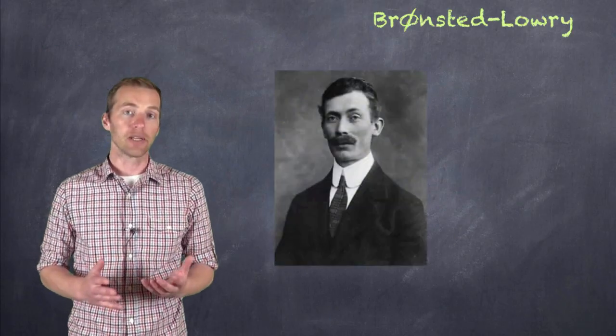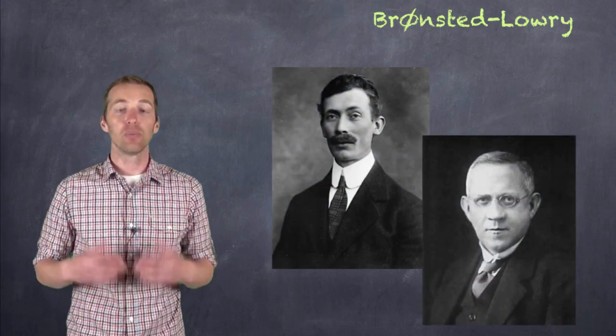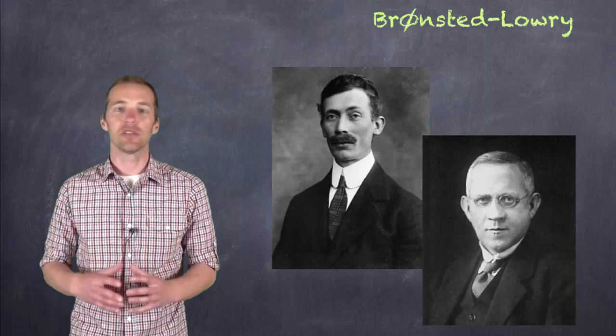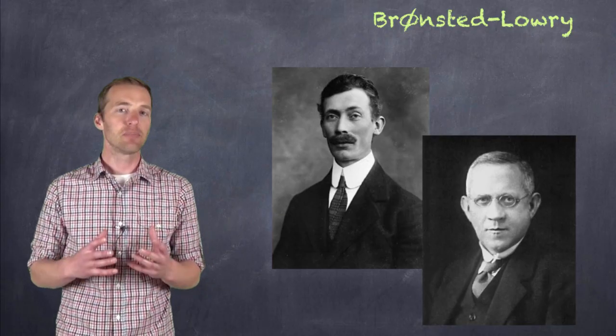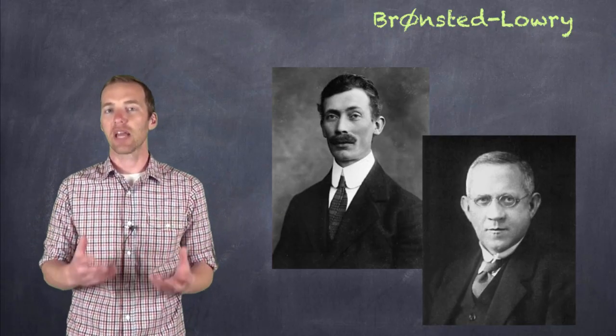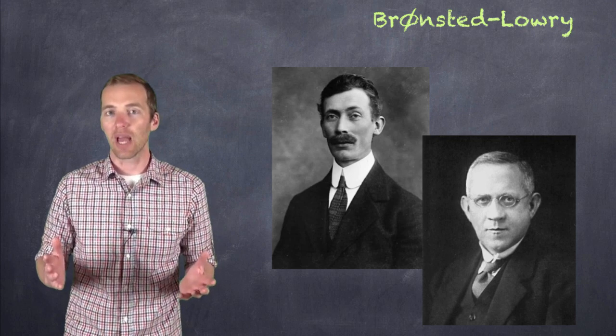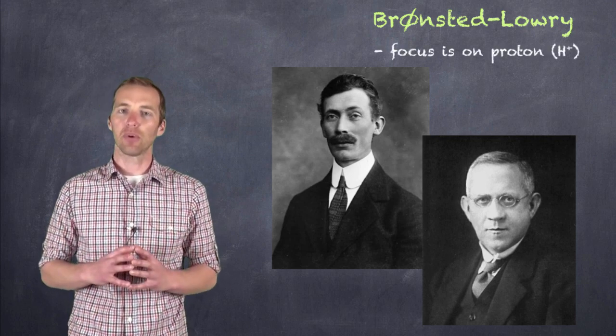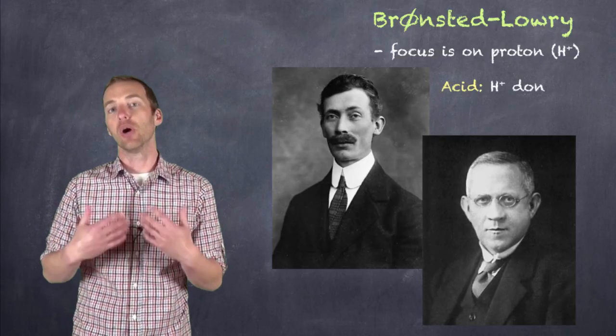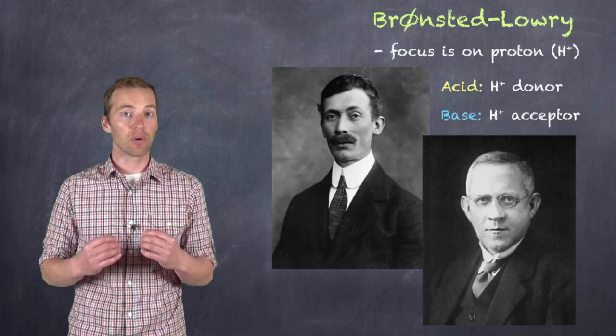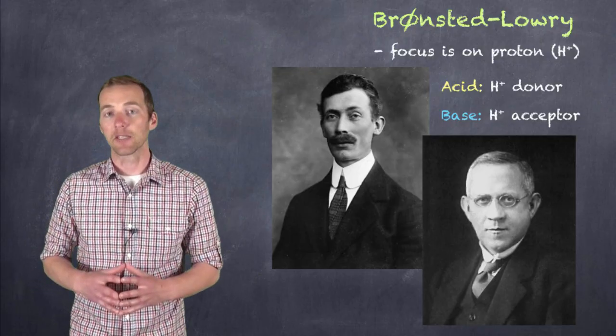And there are these two gentlemen here, Nicholas Bronsted and Thomas Lowry, who built upon the ideas of Arrhenius. You see, there were some instances where acids and bases didn't produce hydrogen ions or hydroxide ions in solution, but still behaved as an acid or a base in a particular reaction. So the focus instead became on the reaction and what happened to the proton. And those substances that donated a proton became classified as acids, and those substances that accepted a proton became classified as a base.